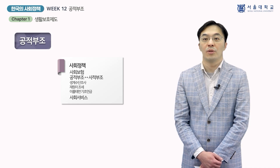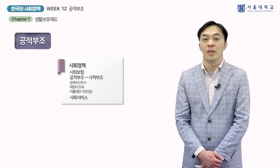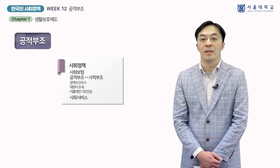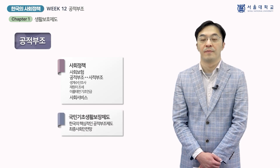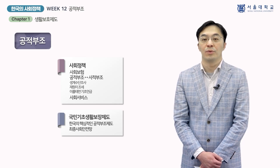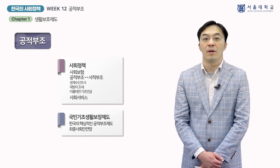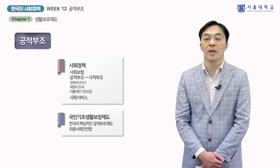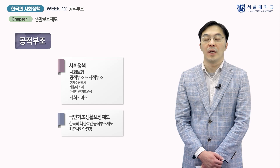여러분들은 이러한 특징을 가진 프로그램을 이미 적어도 하나는 알고 있습니다. 6강에서 다룬 기초연금은 공적부조의 일종입니다. 이번 강의에서는 한국에서 가장 오래된 공적부조제도인 국민기초생활보장제도를 다룹니다. 이하에서는 국민기초생활보장제도를 기초생보로 줄여서 부르도록 하겠습니다. 기초생보는 인구의 2에서 3%에 적용되고 있는데 이들은 한국사회에서 가장 빈곤하고 생활능력이 부족한 사람들을 포함합니다. 기초생보는 한국의 최종 사회안전망인 것입니다.